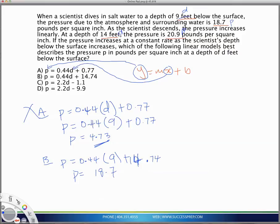Now, just to be sure, you need to test the second set of numbers. When I plug in 14 for d, I should get a p that's 20.9. So, let's do that.